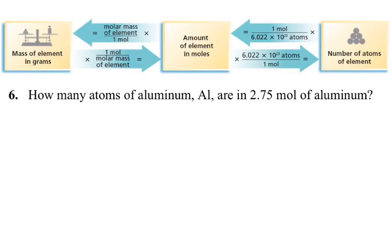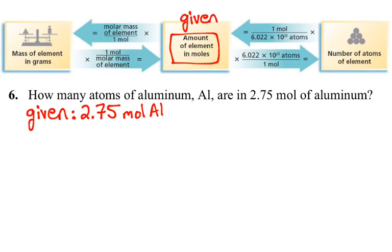Like all of these problems, I think it is helpful for us to take a look at what we are given. So we are given 2.75 moles of aluminum. We look at this diagram that we got out of our textbook up at the top. We have a starting point here of moles. So we are given an amount of our particular element in moles, 2.75 moles of aluminum.